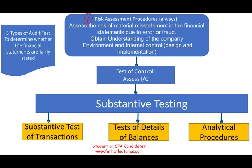The five types are: one, risk assessment procedures; two, test of control; and then substantive testing, which includes substantive testing of transactions, test of detailed balance, and analytical procedures. In this session, we're going to see when we use the different tests, under what circumstances, what factors affect this, and how these tests interrelate with each other.